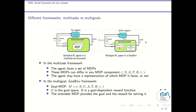There are different possible frameworks to represent goal-conditioned reinforcement learning. First, let's distinguish the case where the agent has to solve multiple tasks and the case where it wants to achieve different goals in the same task. In the multi-task case, you have several MDPs and a single agent that wants to address those different MDPs. In the multi-task framework, the agent faces a set of MDPs that can differ in any MDP component — different state space, different action space, different transition function, etc.